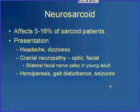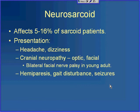Neurosarcoid affects up to 50% of patients. Symptoms can be mild and non-specific — headache and dizziness — but cranial nerves can also be affected, typically the optic or facial nerve. Initially facial nerve involvement was thought to be more common, but recent studies suggest the optic nerve may actually be more common. Bilateral facial nerve palsy in a young adult should bring sarcoid to mind. More severe presentations include hemiparesis, gait disturbance, and seizures, though these are much less likely.